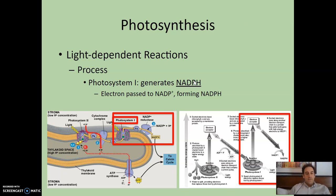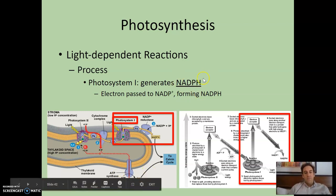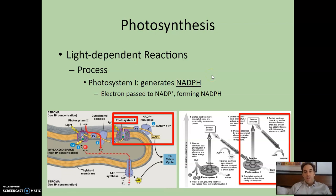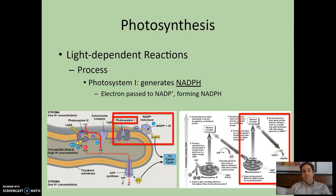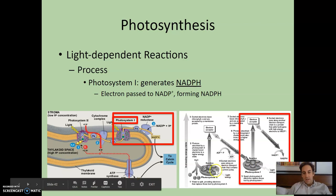Now in photosystem 1: photosystem 2 generated ATP, and photosystem 1 generates NADPH. Light hits photosystem 1, the electron is excited, and this time it's passed directly to NADP+ to form NADPH. By the time we're done, we have converted light energy into the chemical energy of ATP and NADPH. To recap: this electron is excited, this electron is excited, this electron replaces the one lost in photosystem 1, and this electron is replaced by water.